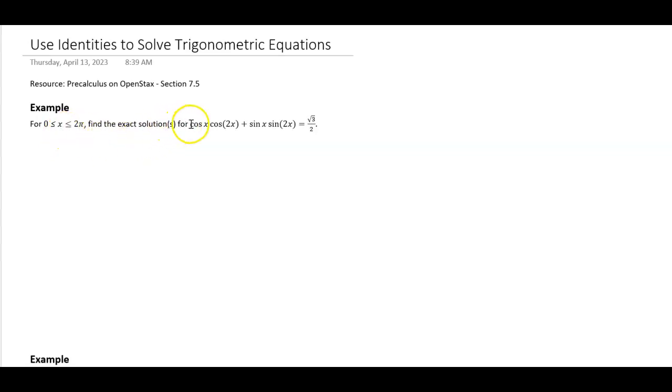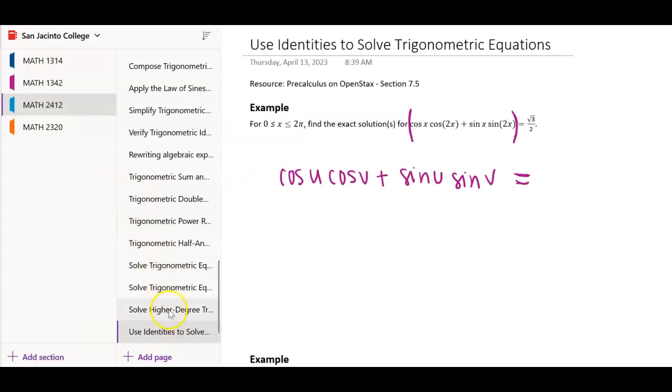On this domain, we're going to find exact solutions for this mess of an equation. One thing I'm noticing is that I have a cosine something, cosine something, and then sine something with a sine something. Maybe if I write it like this, I need to go back to my sum and difference formulas and see what that is equivalent to.